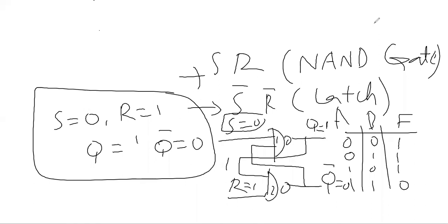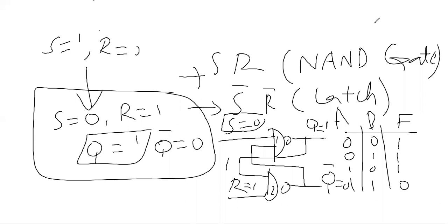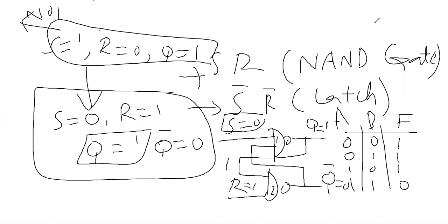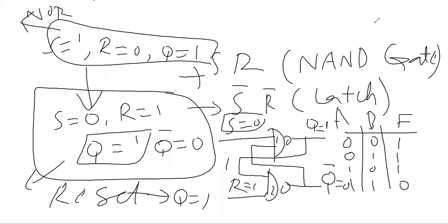When you give 0 at S you get Q equal to 1. In the previous state when we used the NOR gate, when S was 1 and R was 0, Q was equal to 1. But here it is reverse — when S is equal to 0 and R is equal to 1 in the reset condition, you still get Q equal to 1. So this is the reverse of that gate, therefore we give inversion over S and over R.